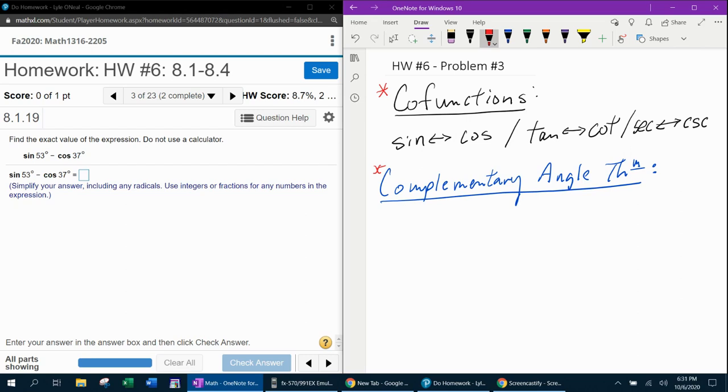So first, you need to know that sine and cosine are co-functions, tangent and cotangent are co-functions, and secant and cosecant are co-functions.